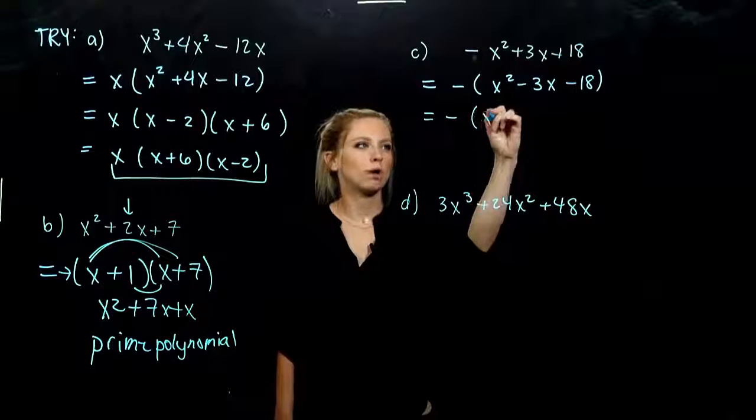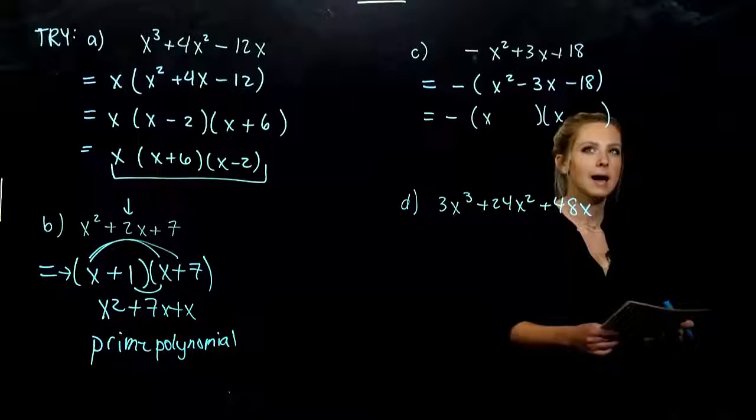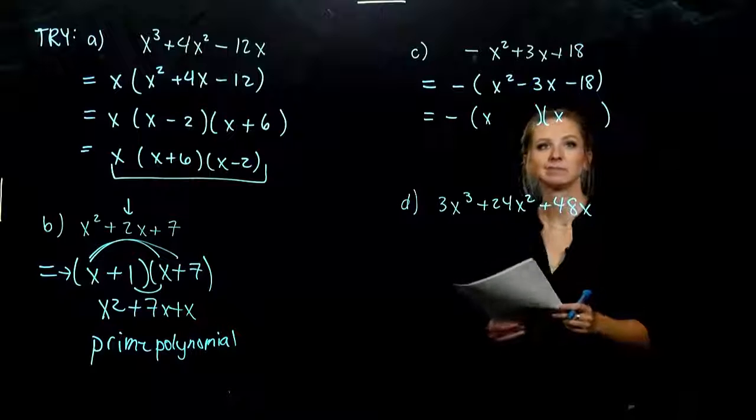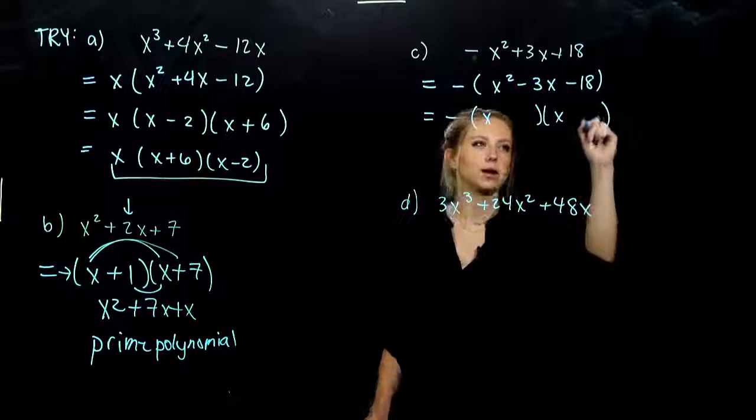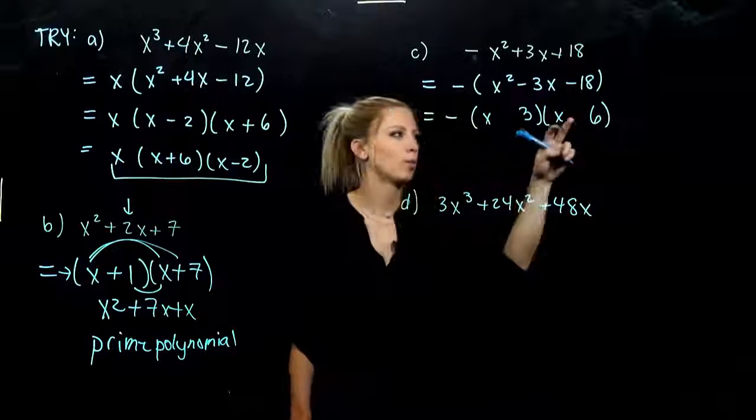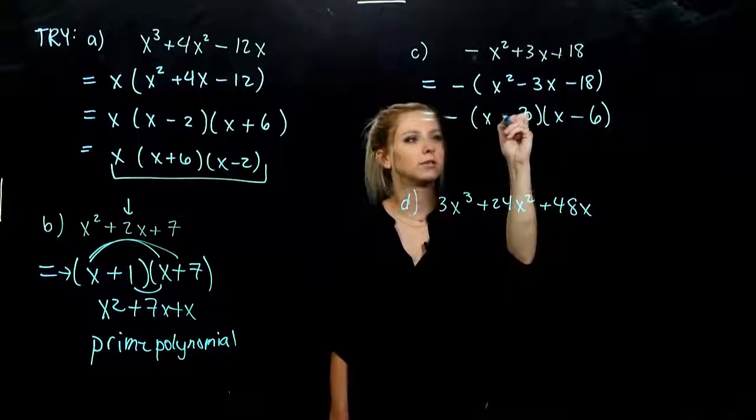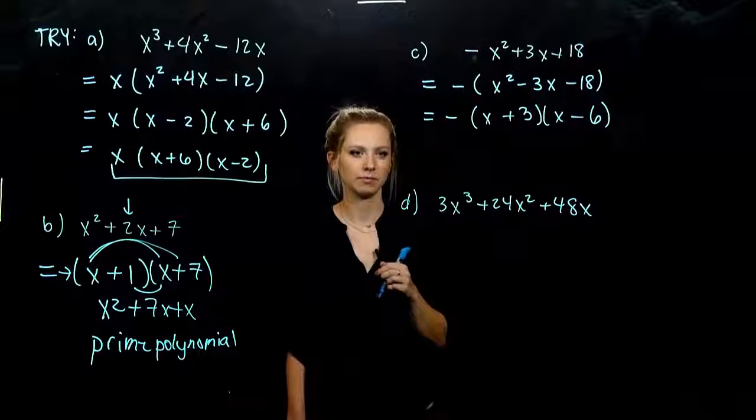And we've got a 1. So we know it's going to be an x and an x. We need a combo that's multiplying to negative 18, adding to negative 3. So we need 6 and 3. And what combo? Positive, negative. The larger term needs to be negative. The smaller one, positive.